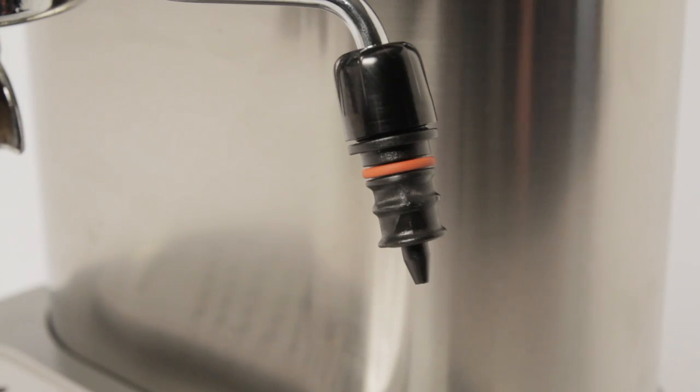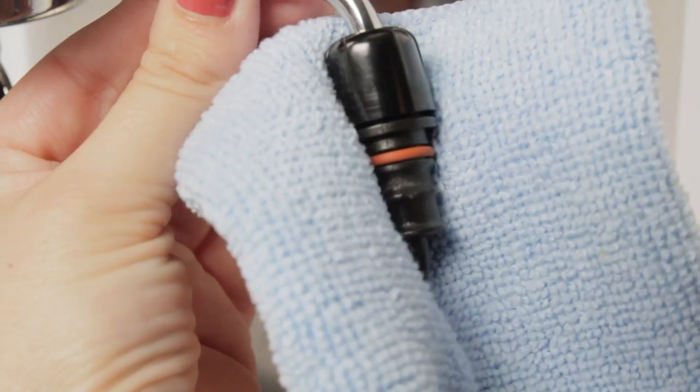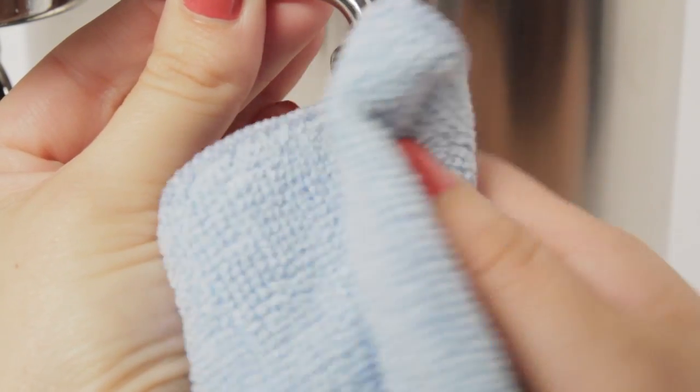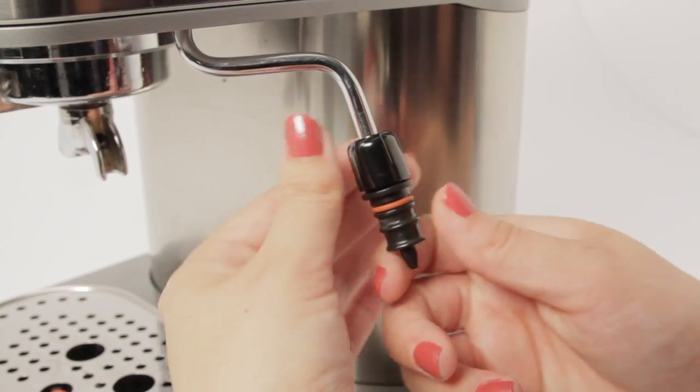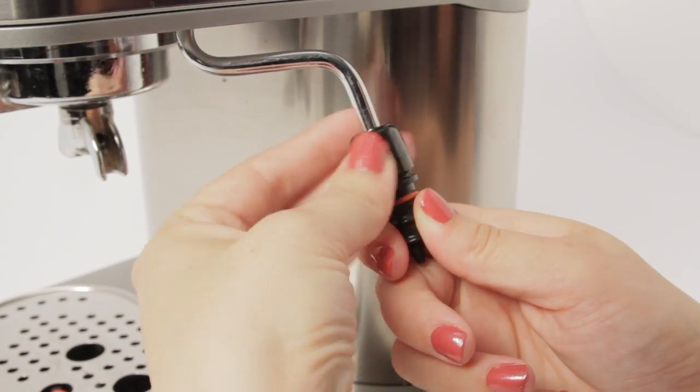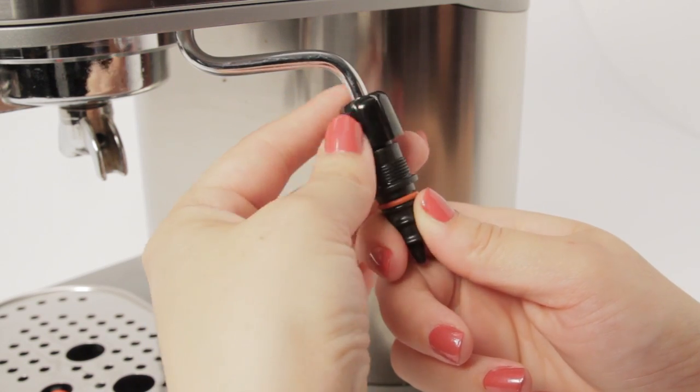With the outer sleeve removed, we see the inner wand. The inner wand should be cleaned of milk residue after each use as well. Next, we'll unscrew the cap nut while holding the inner wand so it does not turn. When the nut is loose, we can carefully pull off the inner wand.